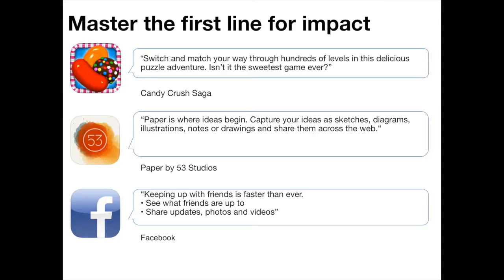Then lastly you've got Facebook. It's not the greatest one, but it really explains the advantages of having the Facebook app. Everyone knows what Facebook is, so they don't need to explain what it's about — instead they need to sell the benefits of using it versus the mobile website. So they say 'Keeping up with friends is faster than ever. See what friends are up to, share updates, photos and videos.' It's pretty basic, but effective. For each of these three apps, they've really made sure that first line counts.